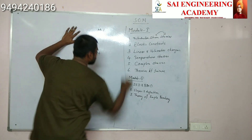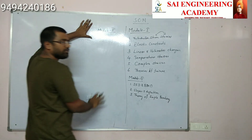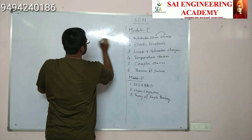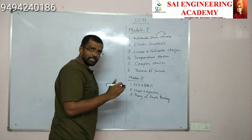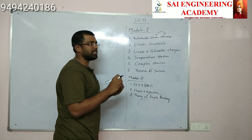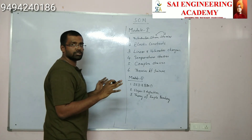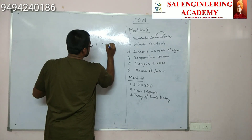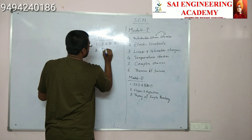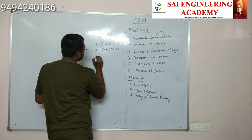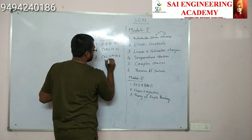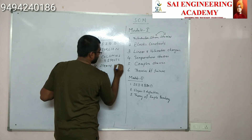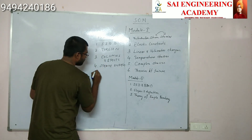Coming to module 3, it consists of small chapters that are very easily understood and take less time — it is like bonus marks with easy questions and less analytical content compared to modules 1 and 2. Module 3 starts with shear stress distribution diagram, then torsion of circular shaft, followed by columns and struts, then strain energy, and finally springs.